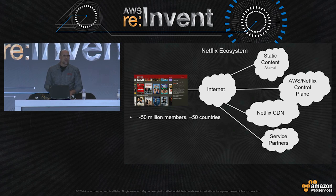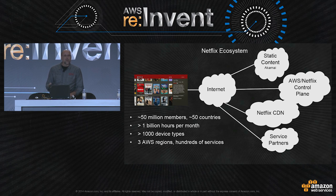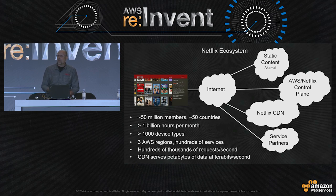To give you a sense of scale: we have over 50 million members in over 50 countries. Every month we serve over a billion hours of streaming video. We run on over a thousand different device types. From an infrastructure perspective, we run in three AWS regions with three availability zones in each region, and we have hundreds of services. At peak, we run at hundreds of thousands of requests per second, and some services have achieved upwards of a million requests per second. Our CDN has a footprint in the petabyte range and serves at terabits per second.